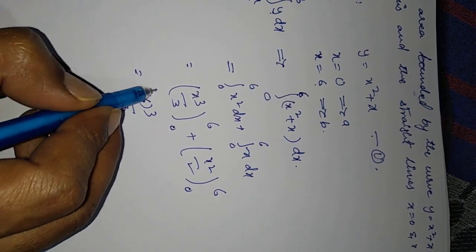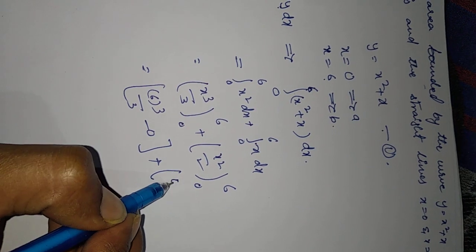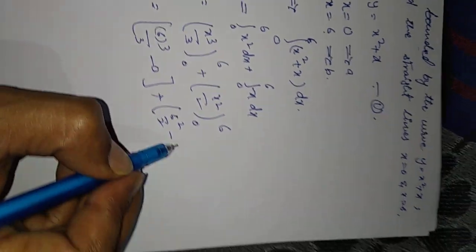6 cubed by 3 minus 0, plus 6 squared by 2 minus 0.